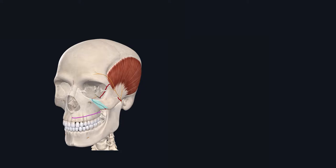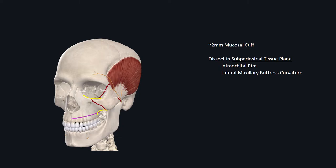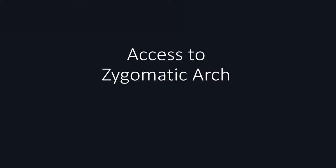To access a fracture at the zygomatic maxillary suture line extending up to the infraorbital rim, use an intraoral maxillary vestibular approach. Leave about 2 mm mucosal cuff for closure, then dissect in the subperiosteal tissue plane and continue until you reach the infraorbital rim and lateral maxillary buttress curvature. As you approach the infraorbital rim, identify the infraorbital nerve as it exits the infraorbital foramen. Laterally, as you expose the lateral maxillary buttress curvature, avoid exposing the buccal fat pad.